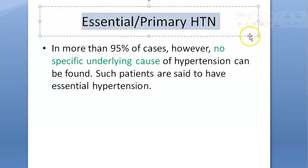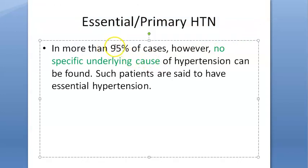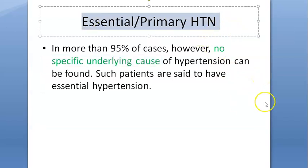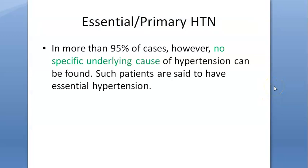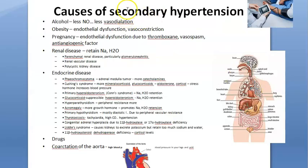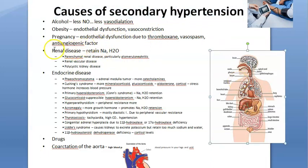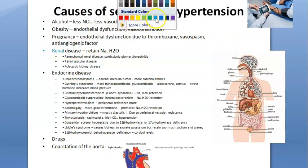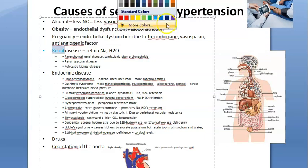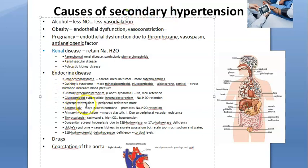What is primary or essential hypertension? Basically there is no underlying cause — that becomes primary or essential hypertension. Secondary hypertension means there is a cause in your body. The main cause can be kidney, or it can be any other endocrine system like your thyroid, adrenal glands, or pituitary gland — mainly the adrenal gland.